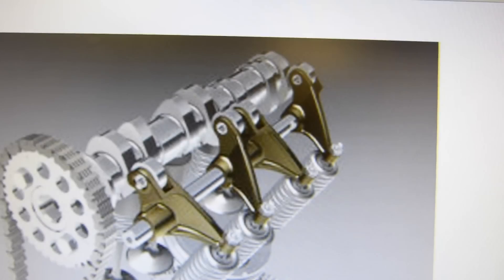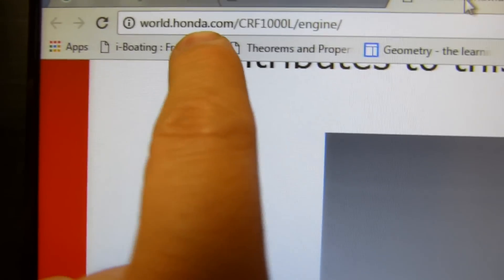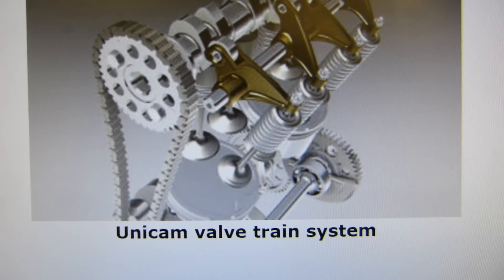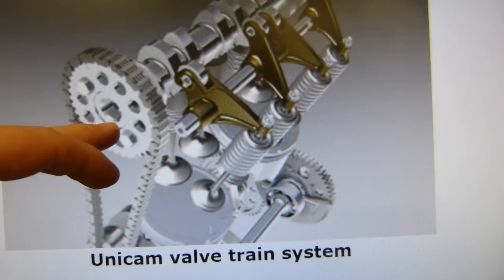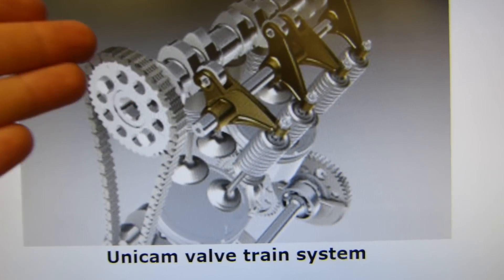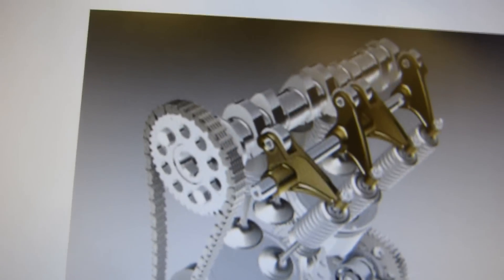Over here I have an image from worldhonda.com. This is an actual Honda image that they produced. And this is not a single overhead cam, although there is a single overhead cam that's rotating here. But Honda calls it a Unicam. This is why.